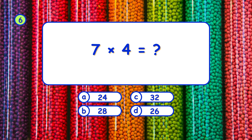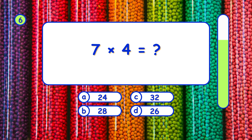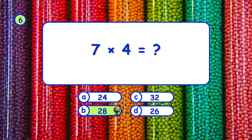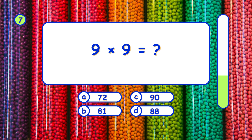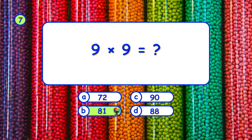What is 7 times 4? It's B, 28. What is 9 times 9? It's B, 81.